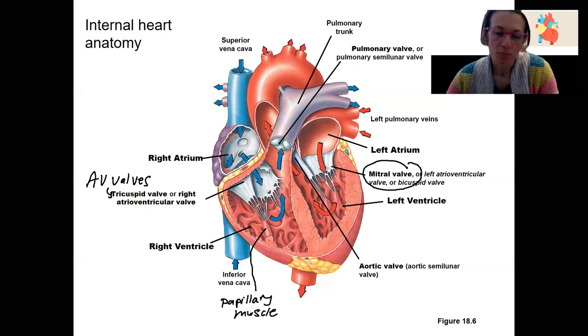It's the muscle that's going to pull down on these cords right here, which are called chordae tendineae. And these structures are going to be important for how these AV valves function.